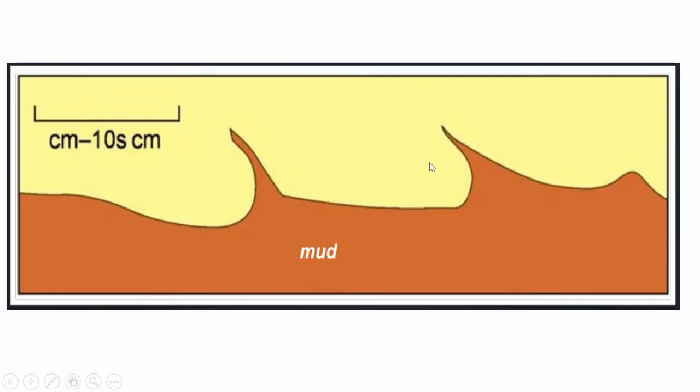Now on to flame structures. Flame structures are a type of convoluted structure which protrude into the bedding above, forming wavy structures or flame-like patterns.